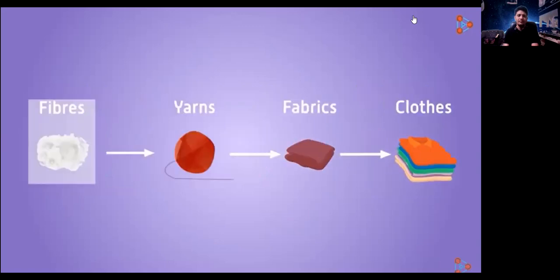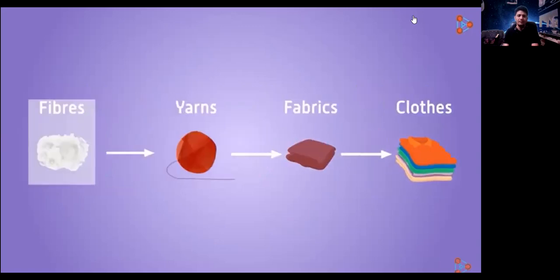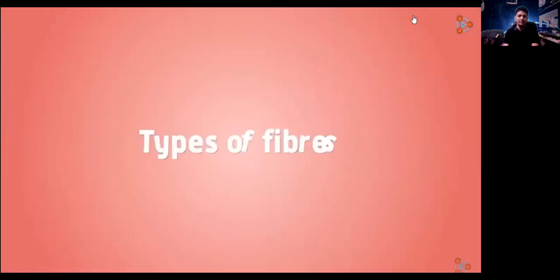So fibers are the threads which are used to make long and continuous usable threads called yarns. These yarns are then woven into fabrics which are used to make stitched clothes for us. Simple, isn't it? So in order to learn about the fabrics, we need to understand the types of fibers first.